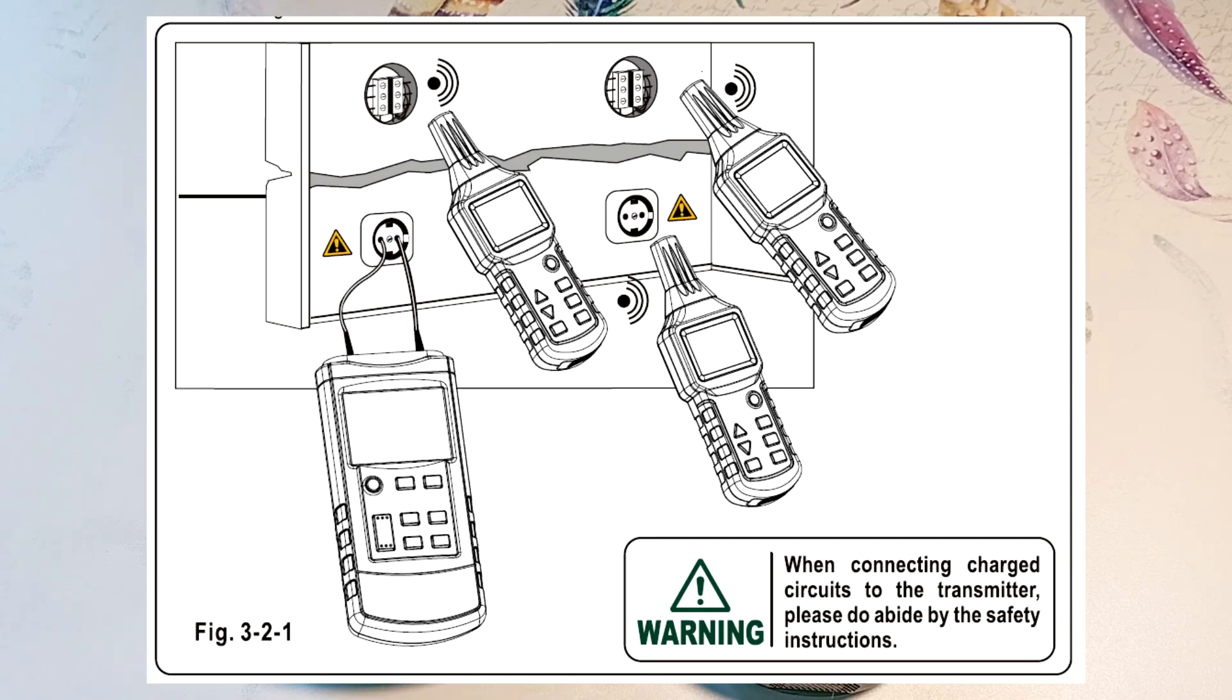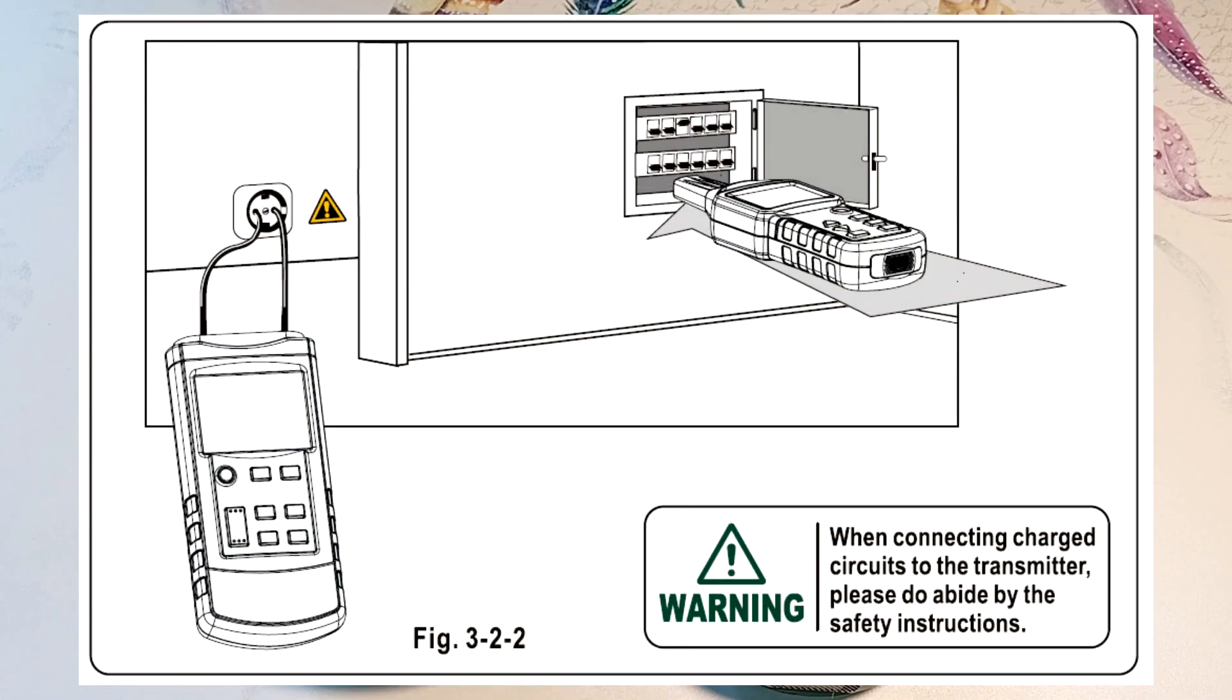If the circuit is energized, then the generator displays the value of this voltage, as well as the type of current, direct or alternating. The receiver uses indicators and a sound signal to track the location of the wiring.